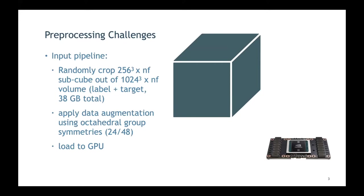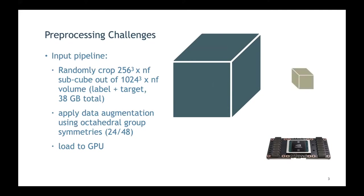They also want to do data augmentation — not only cropping out blocks but also rotating them. The symmetry group they use is the octahedral group, covering all cubic rotations and reflections, to virtually increase the dataset size before loading it onto the GPU.